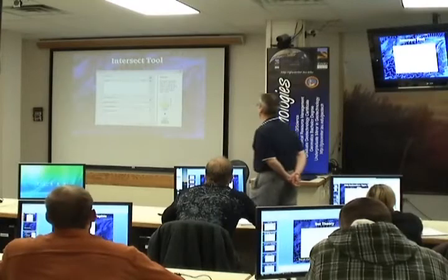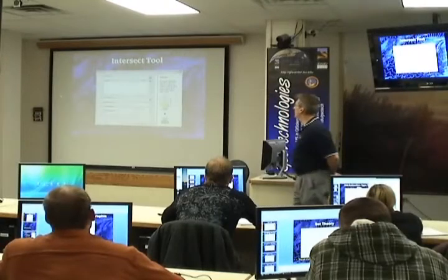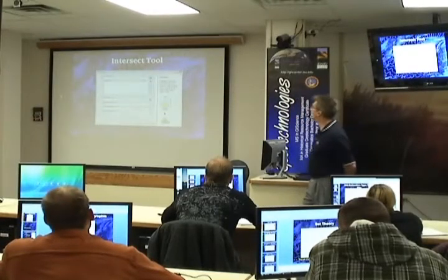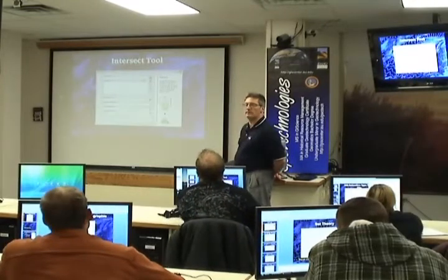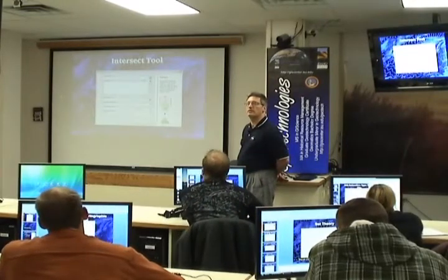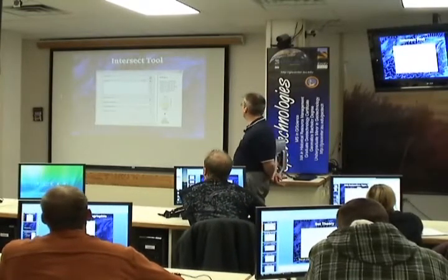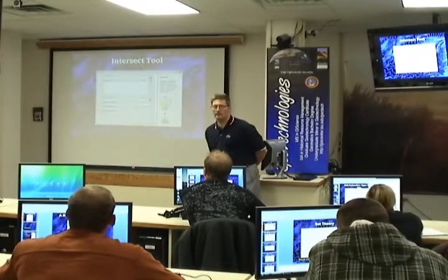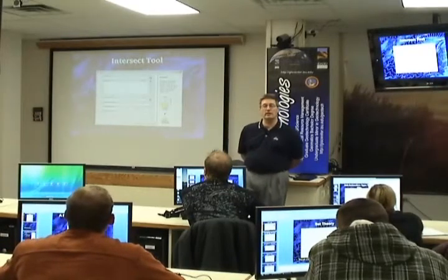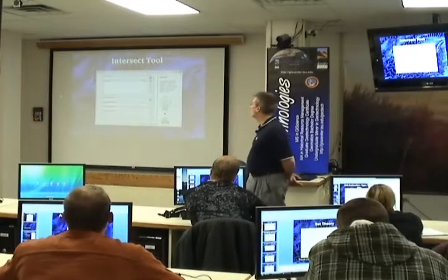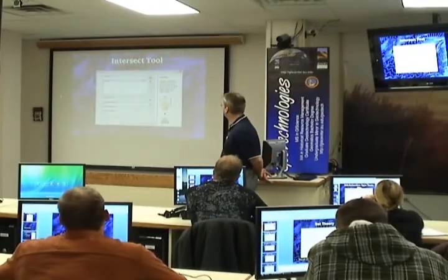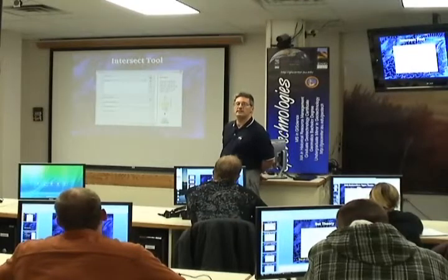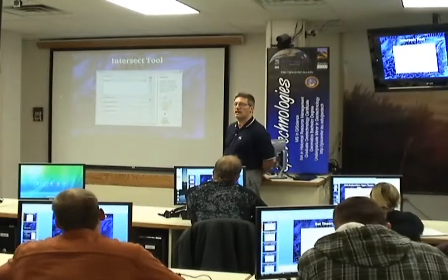What we have here is an input feature class shown in the blue, a light colored blue. And then we have an intersect feature — that's our cookie cutter again. We're going to bring those two together for this output, which looks like a greenish colored semi-circle near the bottom of this slide.